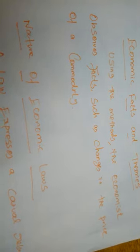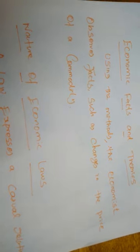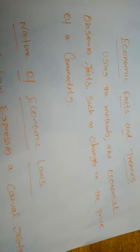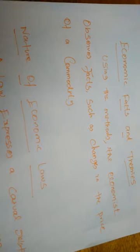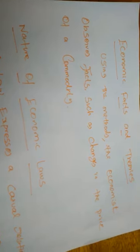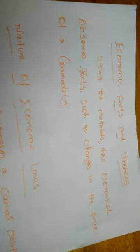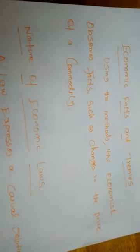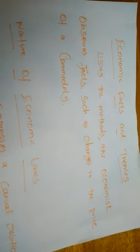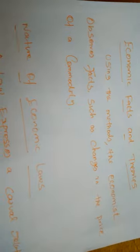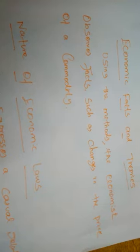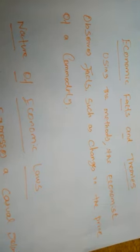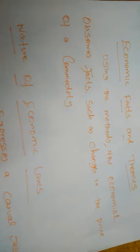For example, if you want to make a law of demand, we have to analyze many facts related to that law. For example, the change in prices of a commodity — the quantity demanded of that commodity will vary. Whenever the price of the commodity is increasing, the quantity demanded will increase or decrease — it varies. On which basis does it vary? Some facts have to be collected.